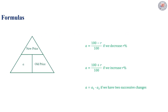As a reminder of the formulas: the new price is equal to A times the older price, where A is equal to (100 minus R) over 100 if we decrease R percent, or A is equal to (100 plus R) over 100 if we increase R percent. And if we have two successive changes, then A is equal to A1 times A2.